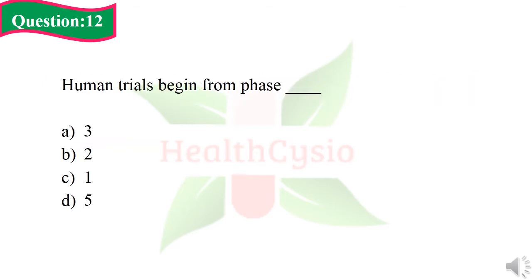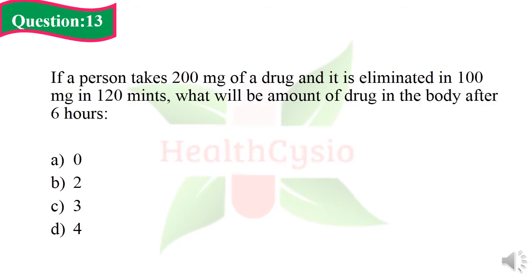Question 11: If a boy does not go to school, becomes happy and lively, and his eyes are red, then he is on 'sasta nasha' (cheap intoxicant). Option A: marijuana. Option B: cocaine. Option C: charcoal. Option D: none of above. The right answer is Option A, marijuana. Question 12: Human trials begin from phase dash. Option A: Phase 3. Option B: Phase 2. Option C: Phase 1. Option D: Phase 5. The right answer is Option C, Phase 1. Question 13: If a person takes 200 mg of a drug and it is eliminated at 100 mg in 120 minutes, what will be the amount of drug in the body after 6 hours? The right answer is Option A, 0.